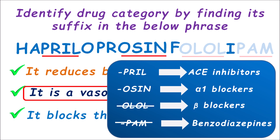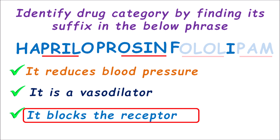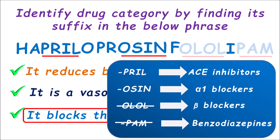We now have two options: -PRIL and -OSIN. Let us go to the third clue: it blocks the receptor. PRILs are ACE inhibitors — they inhibit the enzyme angiotensin converting enzyme, thereby inhibiting angiotensin II synthesis and producing vasodilation. So PRIL is not the right option here. The drugs ending with -OSIN are alpha-1 blockers. These drugs block alpha-1 adrenergic receptors located directly on the blood vessels. That is why alpha-1 blockers are called direct vasodilators. So the right answer is -OSIN.